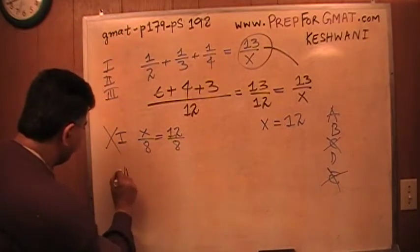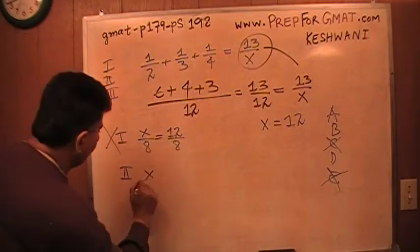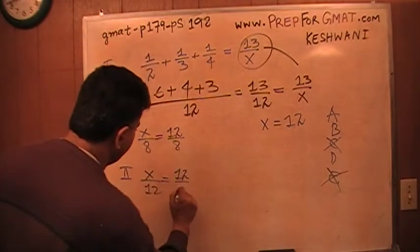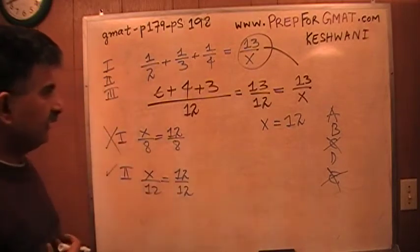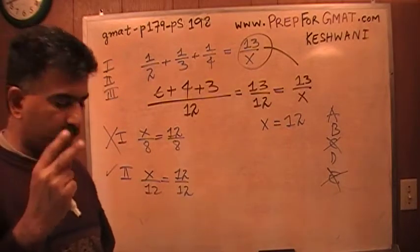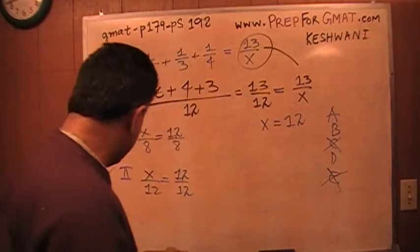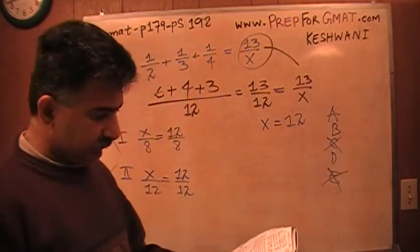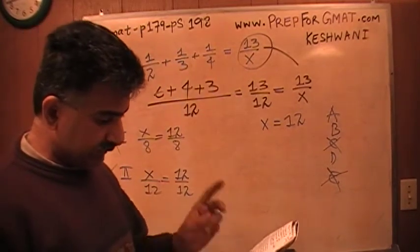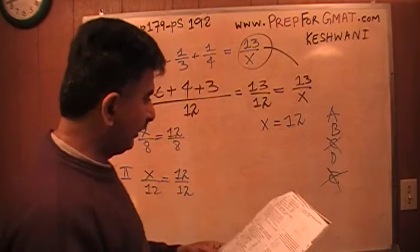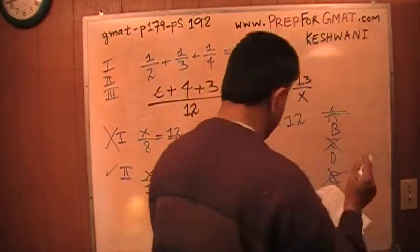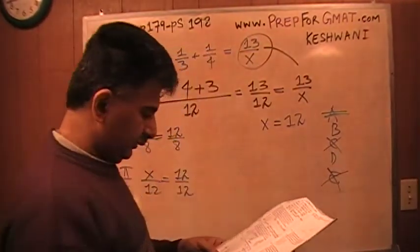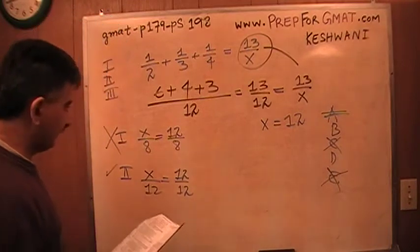Statement number 2 says X over 12. Well, we just found that X is 12, so 12 over 12 is of course an integer, which means statement 2 is correct. Any answer choice that does not have Roman numeral 2 in it, I'm going to cross out. So I can cross out A — A does not work. C was already gone. That's about it. Let's look at the last statement.